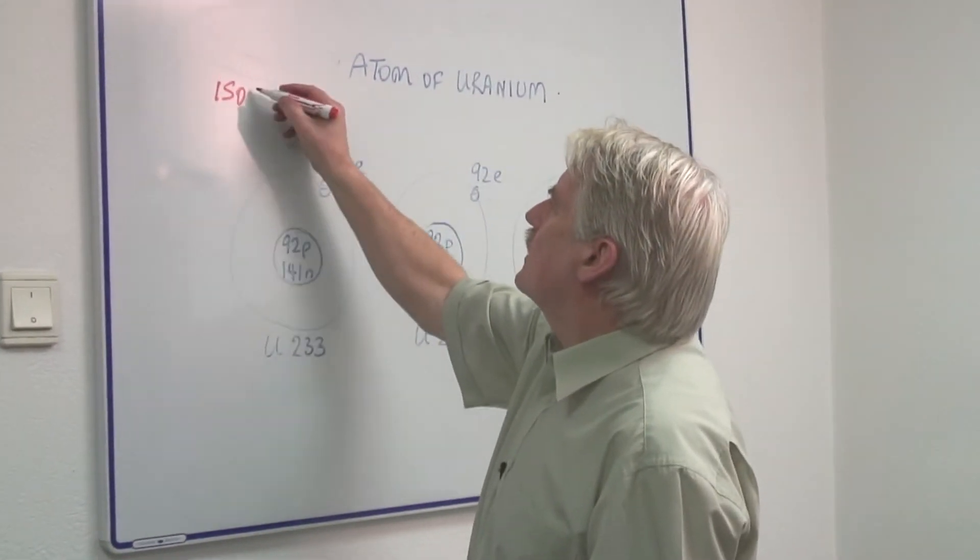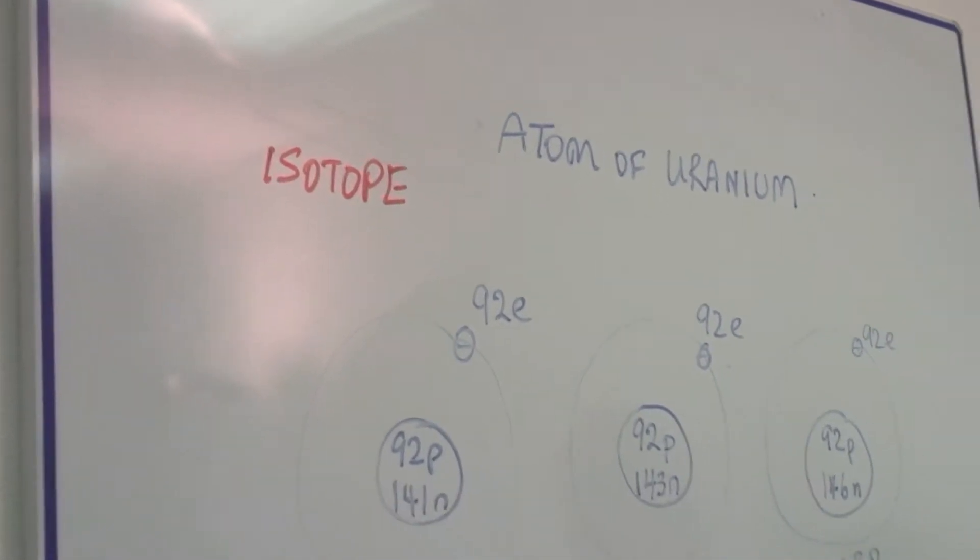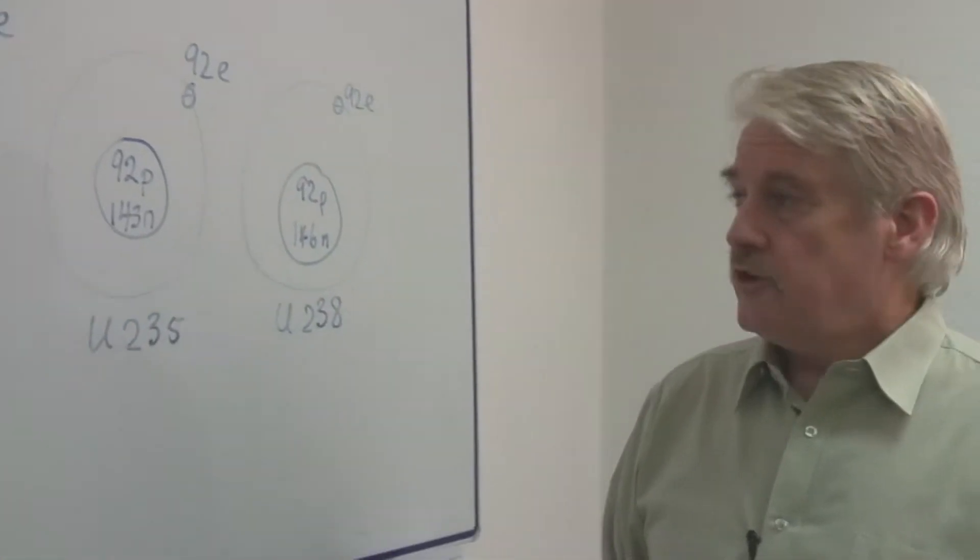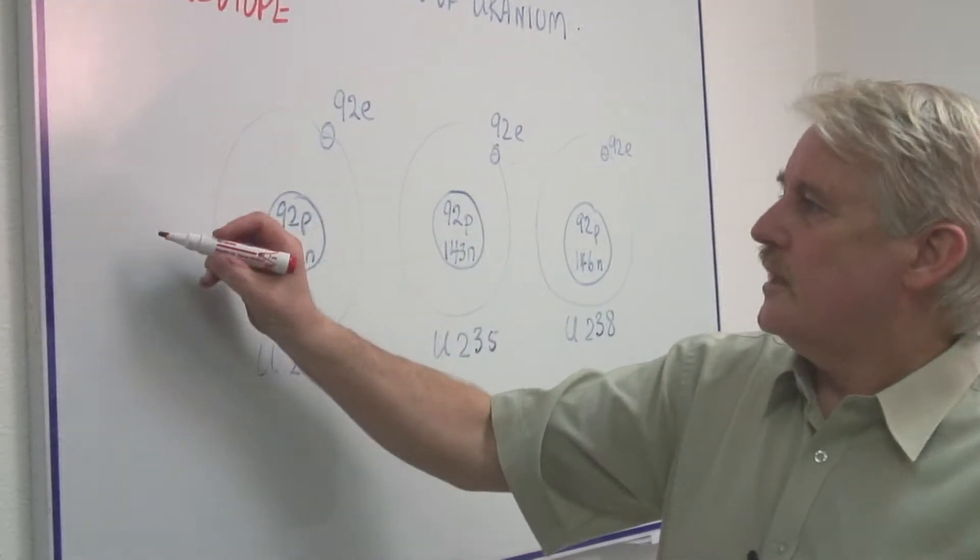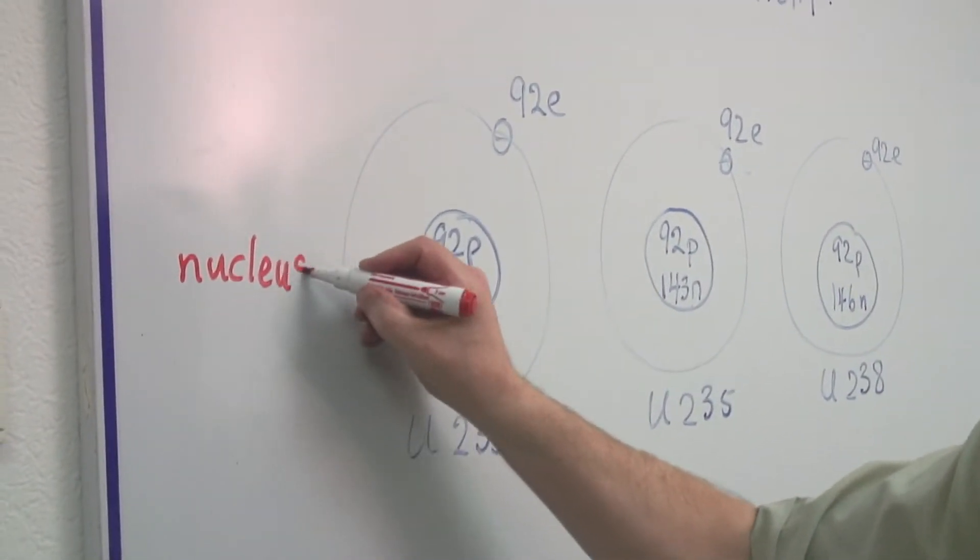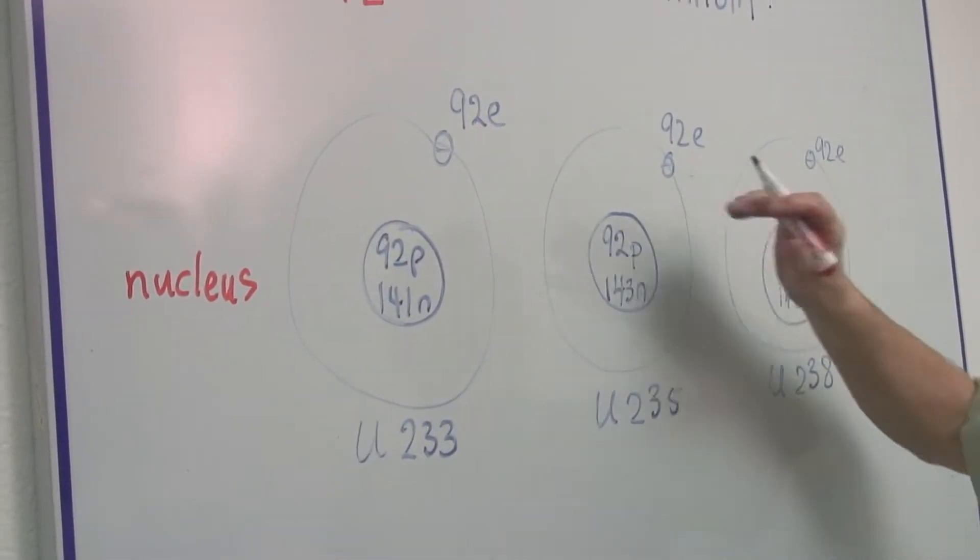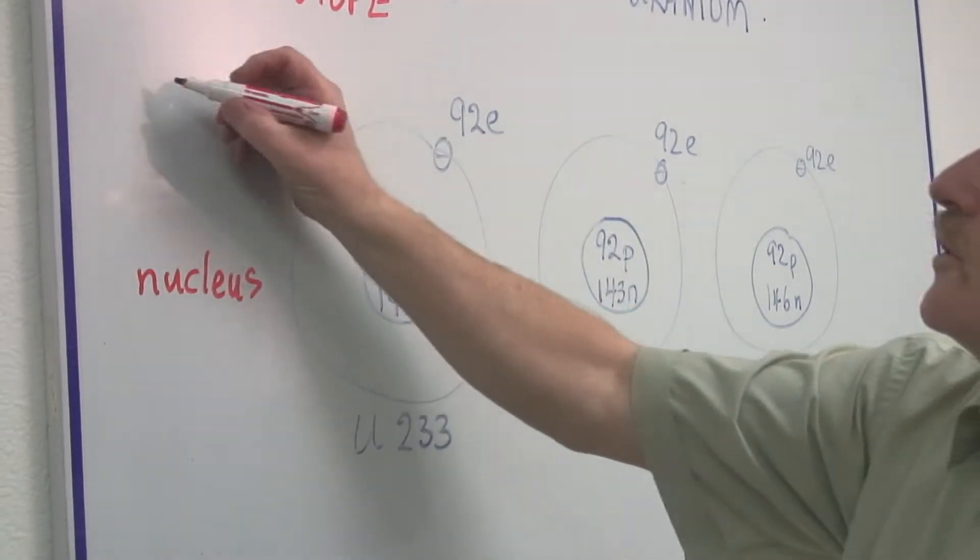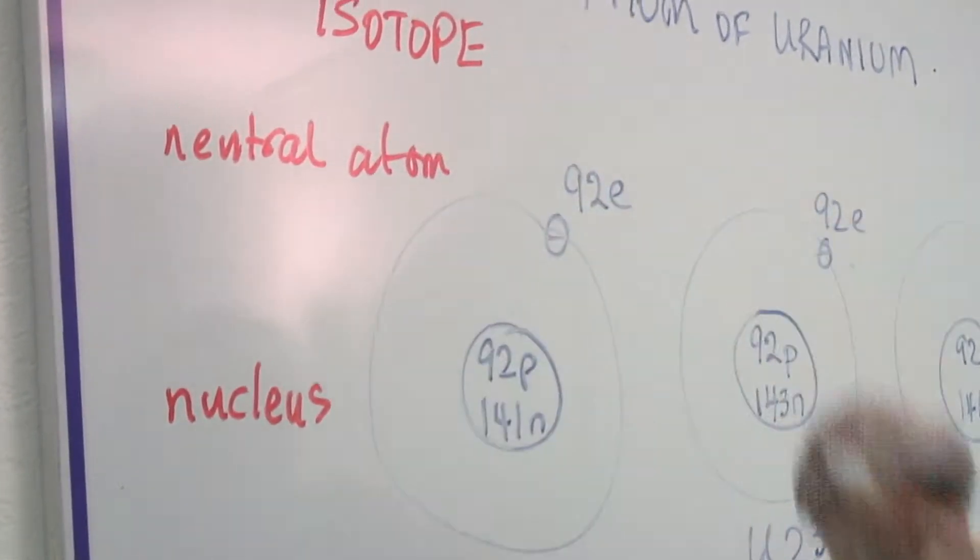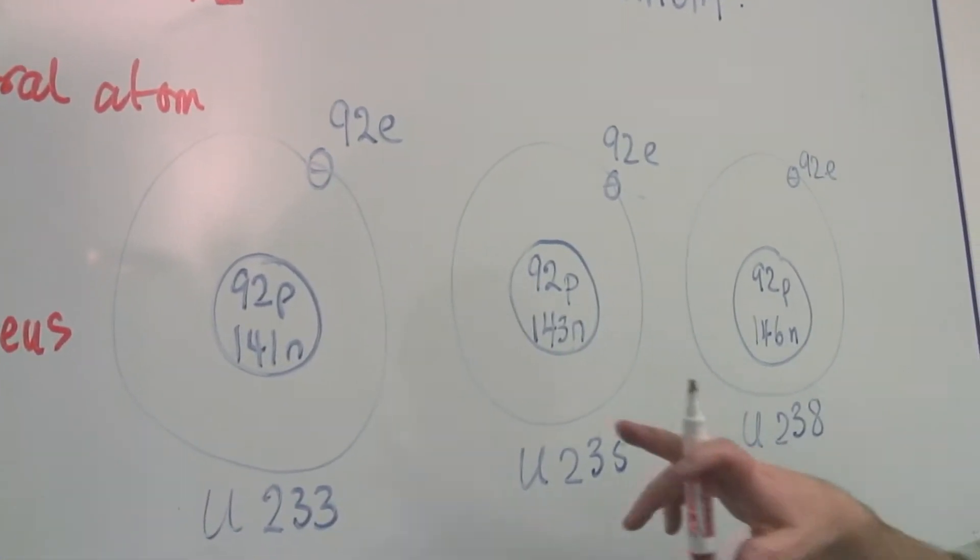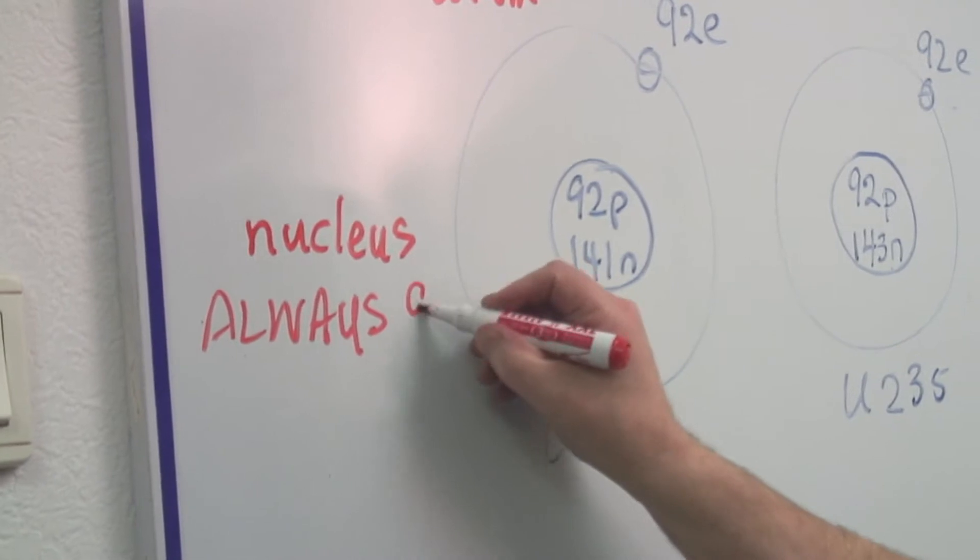Each of these is an isotope, and an isotope has the same chemical form but a different mass. And you can see in each case I have the nucleus of the atom here at this point, the nucleus. I have the surrounding electrons and you'll notice for a neutral atom, a neutral atom there will always be ninety-two electrons.